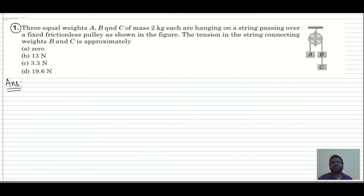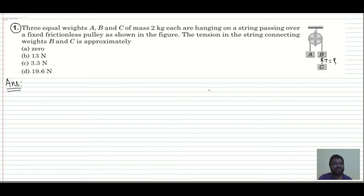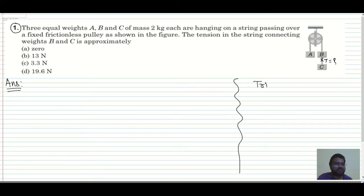The first question: three equal weights A, B, C of mass 2 kg each are hanging on a string passing over a fixed frictionless pulley as shown in the figure. The tension in the string connecting weights B and C is what we want. To find this type of tension in strings, I'll tell you one trick — actually it's a well-known fact.